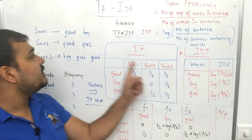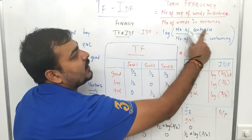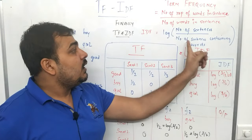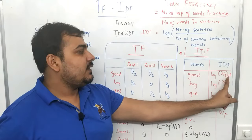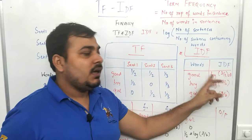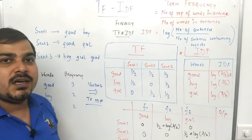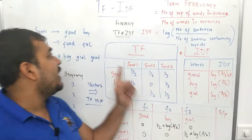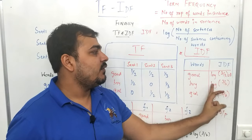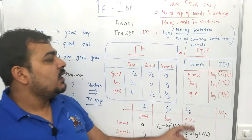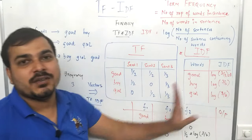If I want to calculate the inverse document frequency for 'good': log of three divided by how many sentences contain 'good' — good is present in sentence one, two, and three, so the count is three. Log of three by three is nothing but zero. For 'boy': log of three by two, because boy is present in sentence one and sentence three. Inverse document frequency for 'girl' is also log three by two, because girl is present two times. So I've got the inverse document frequency values.